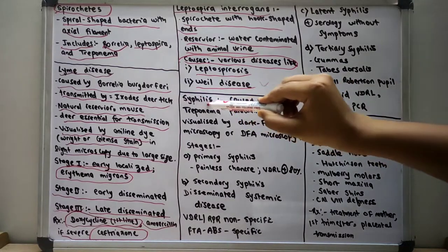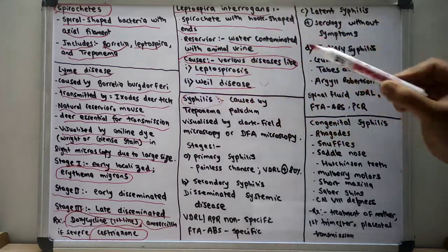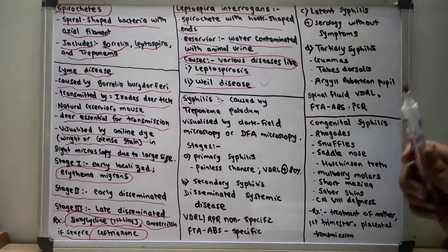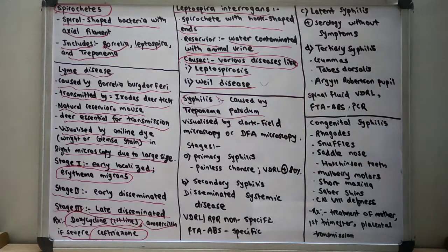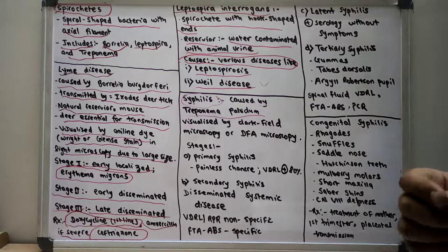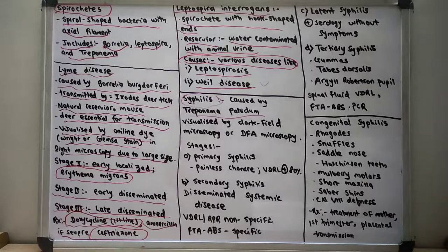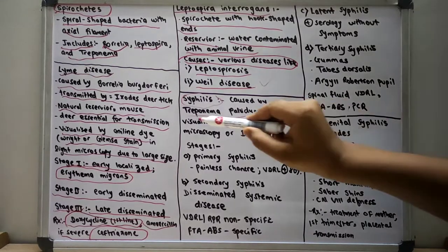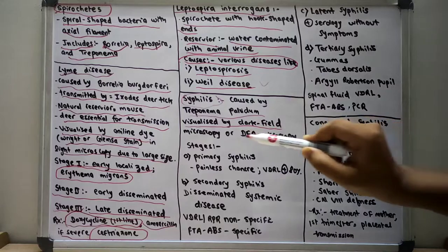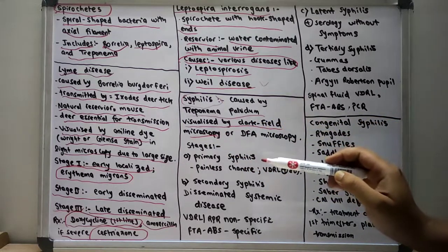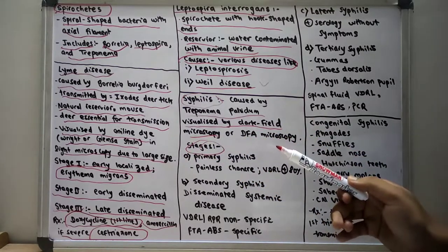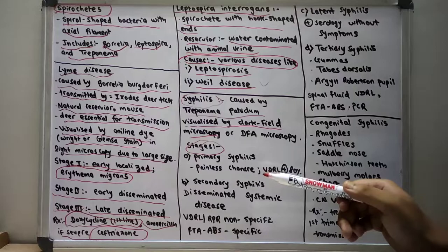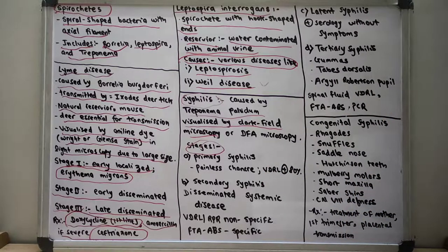Now let us talk about one of the most important topics — syphilis. Syphilis is caused by Treponema pallidum. Treponema pallidum is visualized by dark field microscopy. There are mainly three stages of syphilis: primary syphilis, secondary syphilis and tertiary syphilis. Latent syphilis comes between the secondary and the tertiary stages.